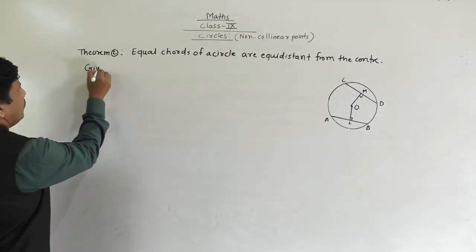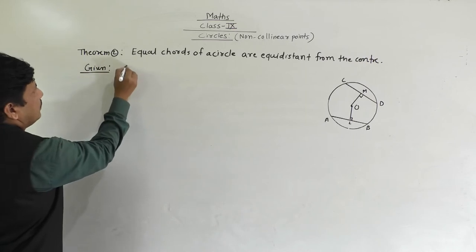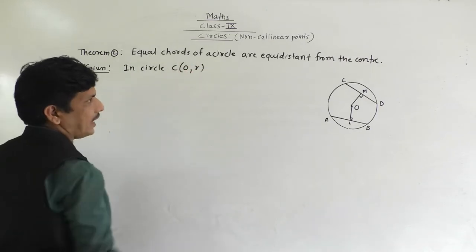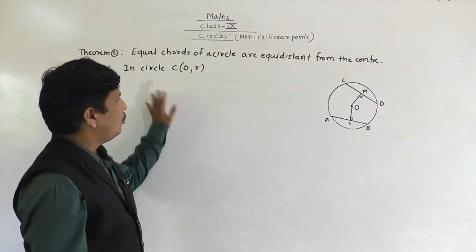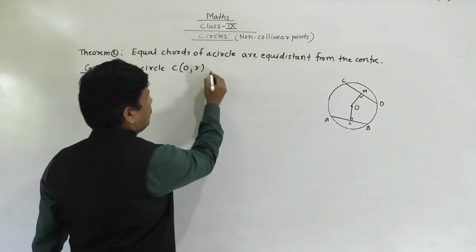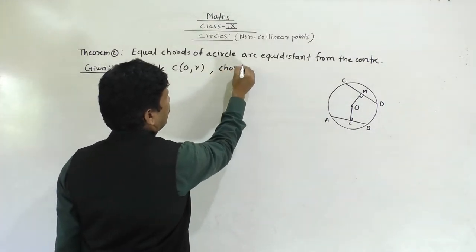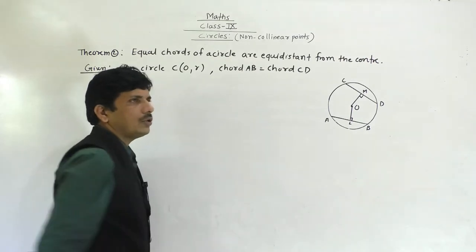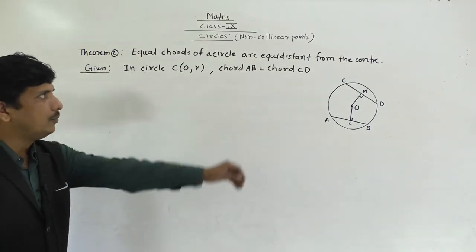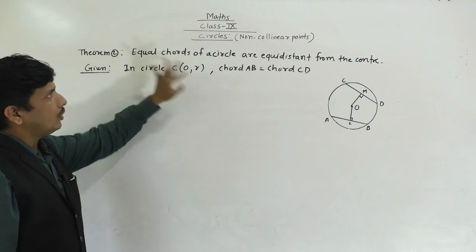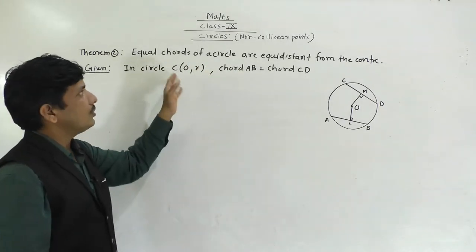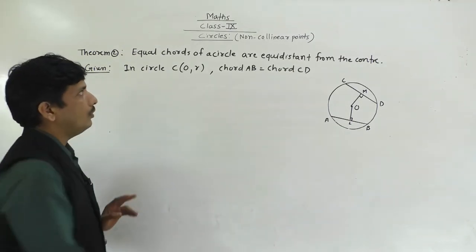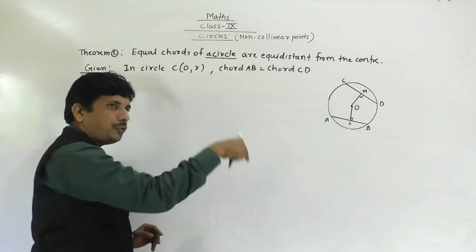Given: in circle C(O, R), O is the center and R is the radius. Chord AB is equal to chord CD. We have to prove that equal chords of a circle are equidistant from the center — meaning OM equals OL. To prove: OM is equal to OL.